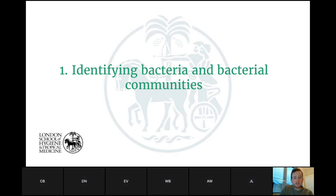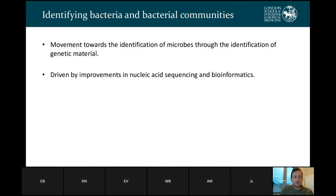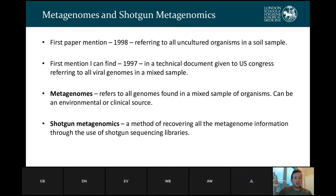When we think about identifying bacteria and bacterial communities, there is a move towards the identification of microbes through the identification of their genetic material. This has been driven by improvements in nucleic acid sequencing and the bioinformatics needed to analyse that sequencing data. When we think about metagenomes and shotgun metagenomics, the first paper mentioning this ran in 1988, referring to uncultured organisms in a soil sample, and the first mention ever is a technical document given to US Congress referring to viral genomes in a mixed sample, around 1997–98. So it's a relatively new idea, and the actual technical ability to do this in the clinic has come much later.